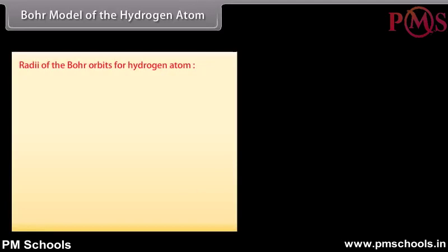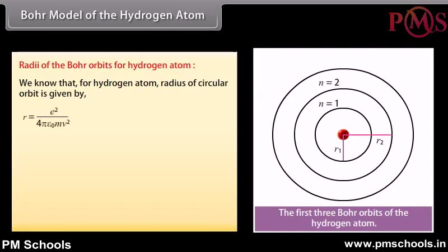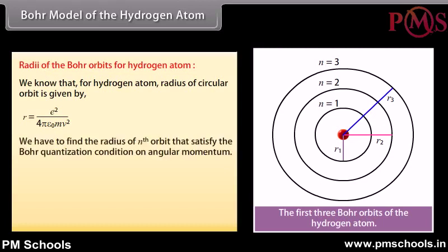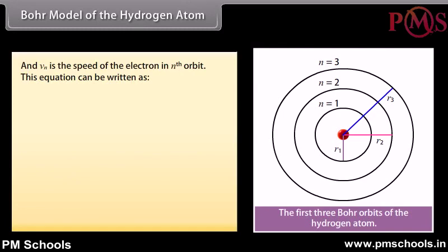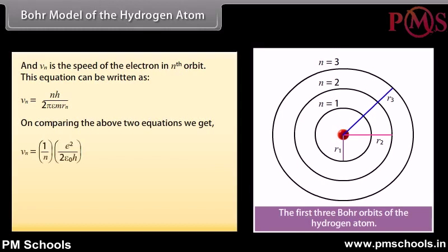Radii of the Bohr orbits of hydrogen atom. The radius of a circular orbit is r = e²/(4πε₀mv²). Applying the Bohr quantization condition on angular momentum, L_n = mv_n·r_n = nh/2π, where n = 1, 2, 3... This gives v_n = nh/(2πmr_n). Solving these equations: v_n = (1/n)·e²/(2ε₀h), and r_n = n²·h²ε₀/(πme²) = n²a₀, where a₀ = 0.529 Å.